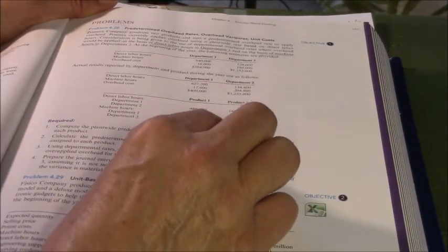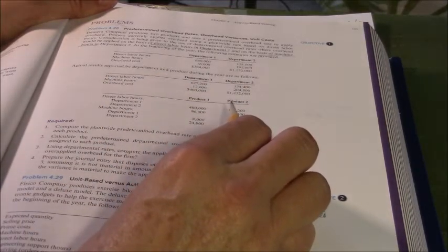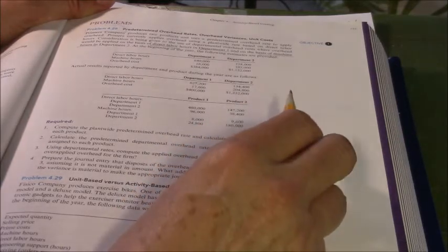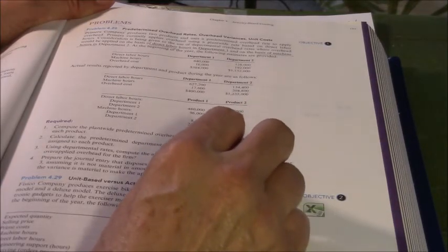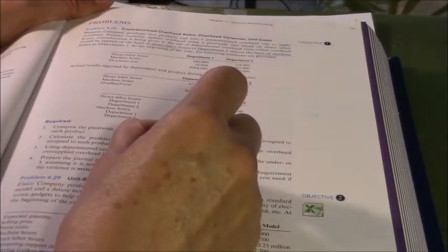I'm going to use these numbers down here where it tells me how many hours I spent. So labor hours for product one in department one and machine hours for product one in department two. So I'm going to need this, I'm going to need this.